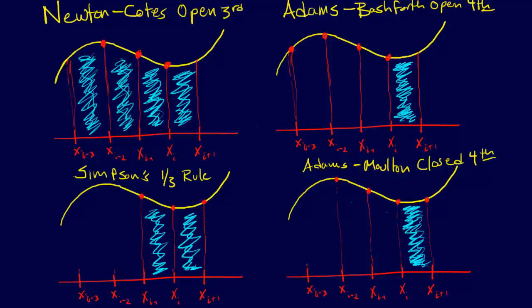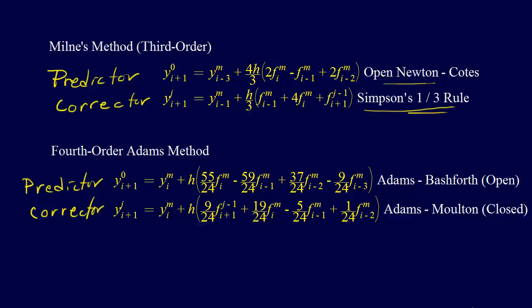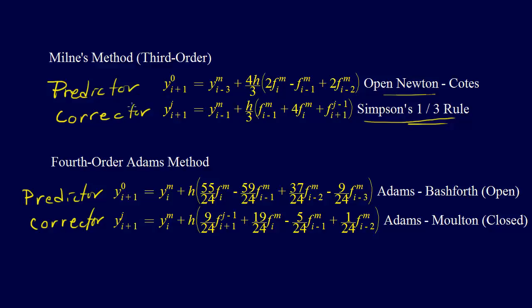And again, these, we could have lower, higher order versions of all of these. We've seen that before, at least for the Newton-Coates formulas. But there's these, but those are the integration formulas that are shown. Those are the formulas that go into these, into these two methods.